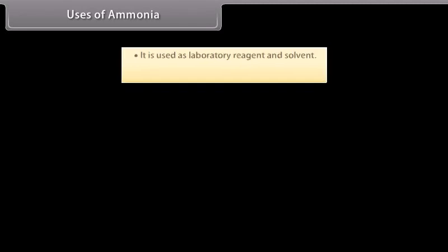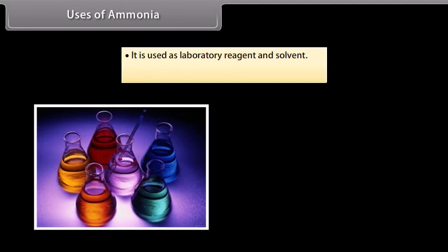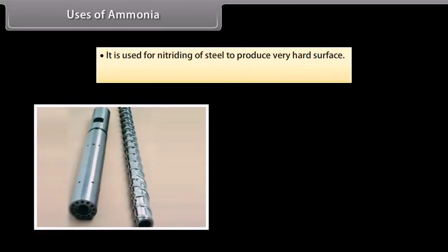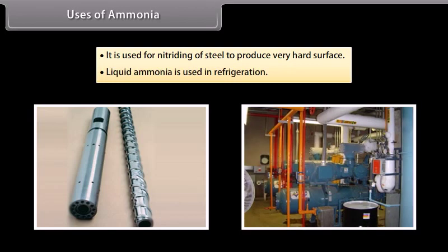Ammonia can form coordinate covalent bonds with transition metal ions to form complexes. Uses of ammonia: It is used as a laboratory reagent and solvent. It is used in industry to manufacture fertilizers. It is used for nitriding of steel to produce a very hard surface. Liquid ammonia is used in refrigeration.